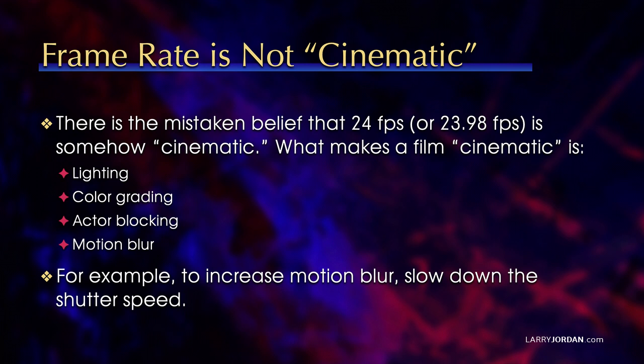The problem is there's this mistaken belief that 24 frames a second, or 23.98, is somehow cinematic. It isn't. What makes a film cinematic is the lighting, the color grading, the actor blocking, the motion blur. 24 frames a second has a lot of motion blur. Well, if you want to increase motion blur, shoot at 30 frames a second and slow down the shutter speed, and things will blur more. I can't stress this enough — the magic of cinema is not the frame rate. The magic of cinema is the filters in front of the lens, the lighting on your talent, the way your talent is blocked, the color grading and the looks you provide, the motion blur.